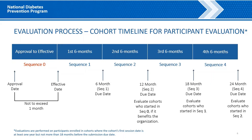Continuing with this example, you can see that at the 18-month Sequence 3 submission point in your timeline, we will evaluate participants who began the program in Sequence 1. At the 24-month Sequence 4 submission point in your timeline, we will evaluate participants who began the program in Sequence 2. This process continues every six months.